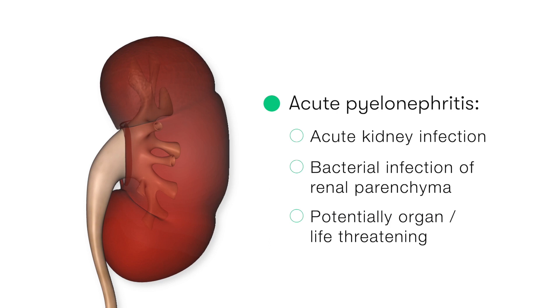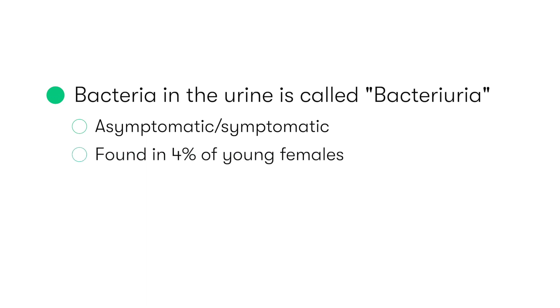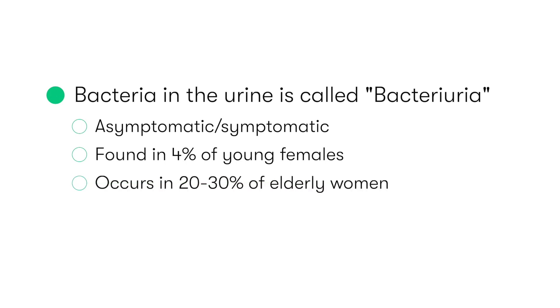In the most severe cases, pyelonephritis can also be life-threatening. The presence of bacteria in the urine is referred to as bacteriuria, and it may be either asymptomatic or symptomatic. Bacteriuria is found in about 4% of young females, but is far more common in elderly women, with an incidence of about 20 to 30%. In men, bacteriuria is far less common; however, in the elderly male population the incidence is approximately 10%, typically related to the presence of prostatic disease.